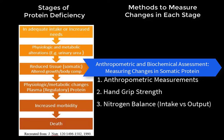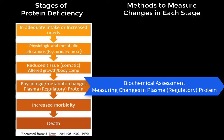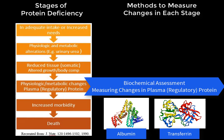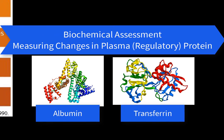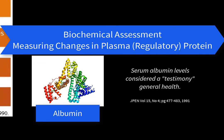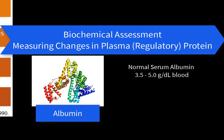The next stage of protein deficiency involves physiological and metabolic changes, often reflected and measured by changes in plasma proteins such as albumin and transferrin. These are carrier molecules that carry minerals, vitamins, fatty acids, and hormones, and are impacted by a large number of pathophysiological changes. Serum albumin is considered a testimony to general health. Normal levels are 3.5 to 5.0 grams per deciliter of blood; when very low — below 2 grams per deciliter — it is predictive of mortality.